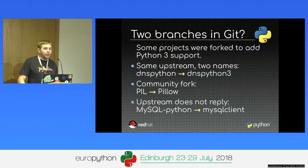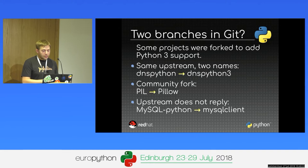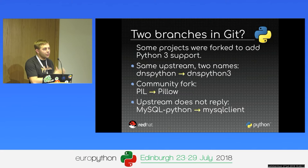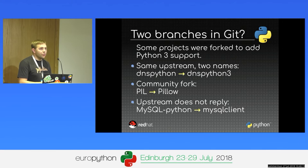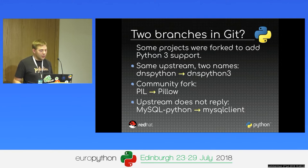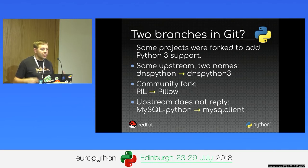If you want to port an application to Python 3, you have different options. You can have two different branches in Git. One example is DNS Python, which was forked into two separate projects: DNS Python for Python 2 and DNS Python 3 for Python 3. Sometimes the community decided to fork projects when maintainers didn't care about Python 3. For example, the PIL module was forked as Pillow — not only adding Python 3 support, but also adding new features.